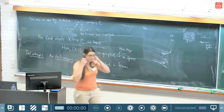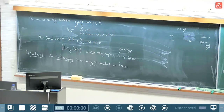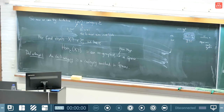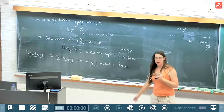A comment from the audience: there are algebraic definitions of infinity-groupoids, and for one of them — the definition of Batanin — Nikolaus and Szymanski actually proved the homotopy hypothesis. Thank you — that's something I'm not so familiar with.